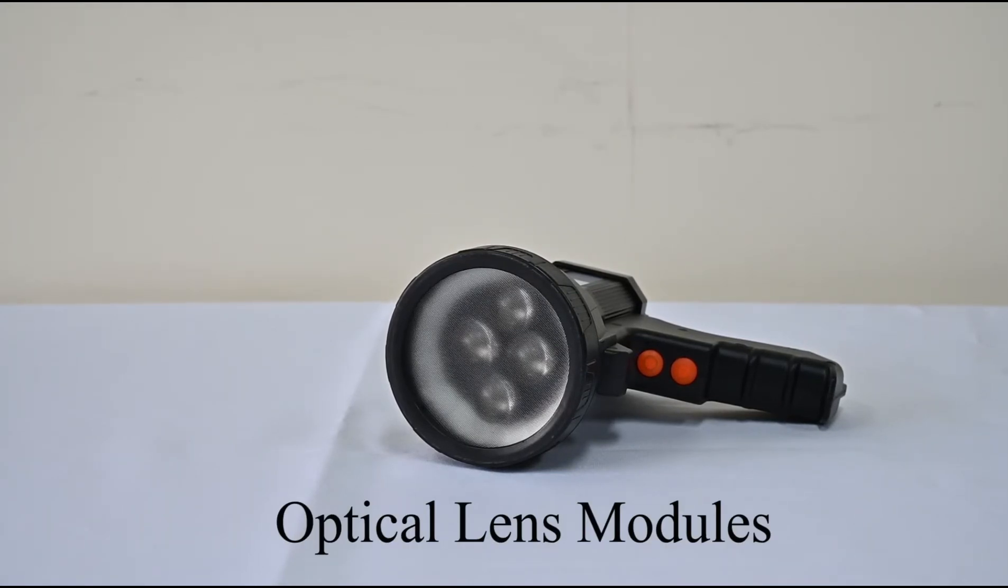There is a set of lens modules consisting of 3 lenses in front of each LED, totaling 4 lens modules. We use multiple lens modules through multiple conventions of the lens, and we can artificially adjust the UV intensity.